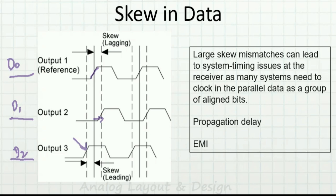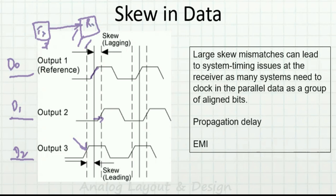These skews will affect reliable data capture at the receiver. Even though the transmitter sends everything at the same edge, at the receiver the data arrives with different timing skews. That becomes a problem in synchronizing the transmitted data. There is also propagation delay between transmitter and receiver, which creates additional issues.